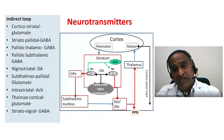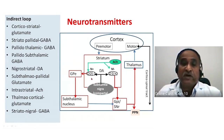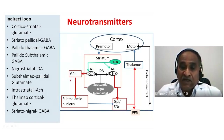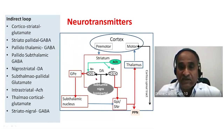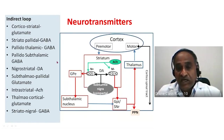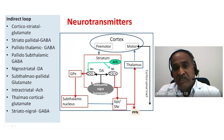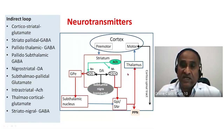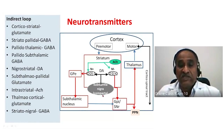The substantia nigra receives inputs from several parts of the brain, especially from the premotor cortex, the nucleus accumbens, the brainstem, and various other regions including the thalamus. All these give information to the pars compacta of the substantia nigra, so information going there would be excitatory.